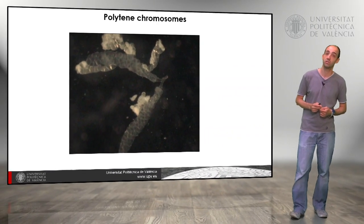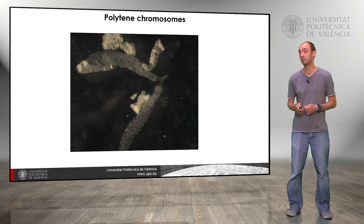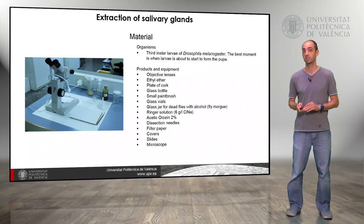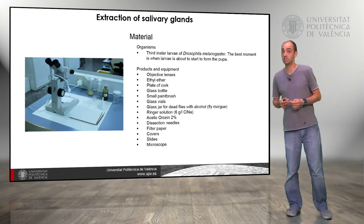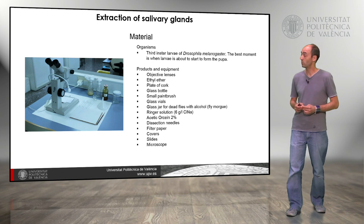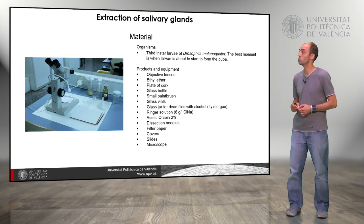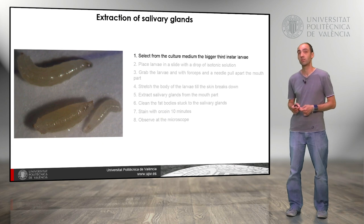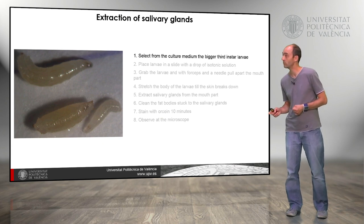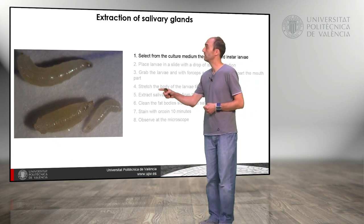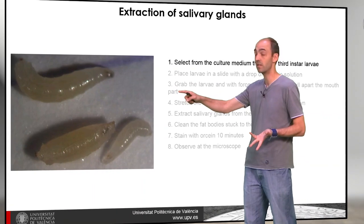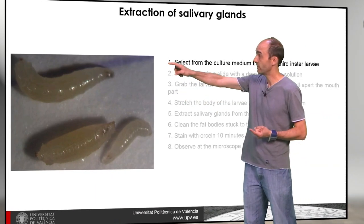Here we have the glands we need to observe the polytene chromosomes, and we have to follow these steps to extract the salivary glands. You need an organism — in this case third instar larvae — and some materials: a lens, paintbrushes, glasses, covers, and slides. The first step is to select the biggest third instar larvae from the culture. We place the larva on a slide with an isotonic solution.